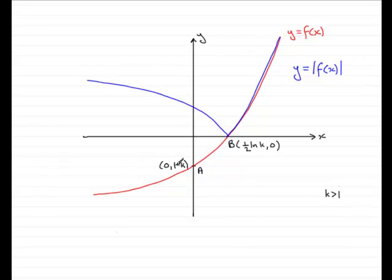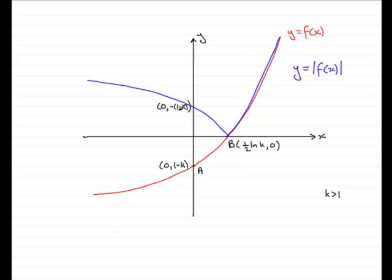Because this is 1 minus k, we're going to get the negative of this value. Imagine if this was say minus 3 — this point would be minus minus 3, which would be plus 3. So the coordinates here are going to be 0 and then minus bracket 1 minus k. And multiplying each term in the bracket by minus 1, you get minus 1 plus k, or k minus 1. So that's the point where y equals the mod of f of x crosses the y-axis.